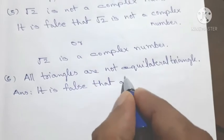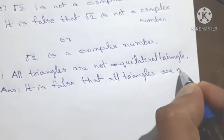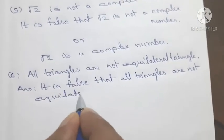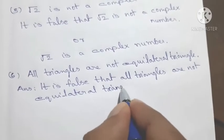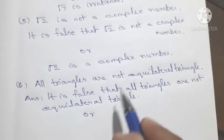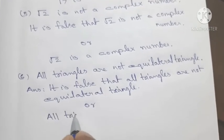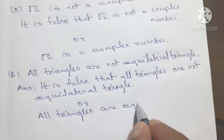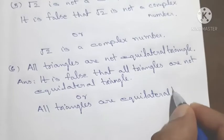All triangles are not equal. The negation: all triangles are equal.